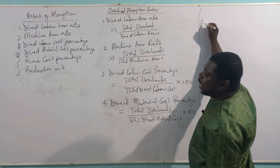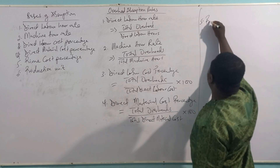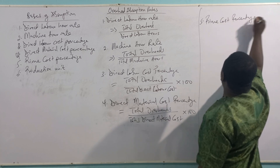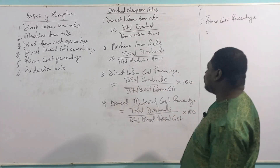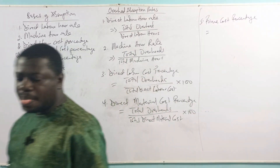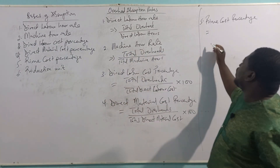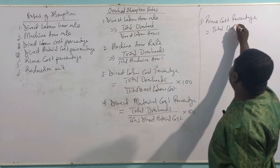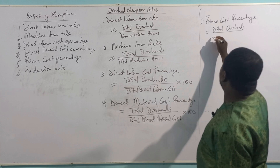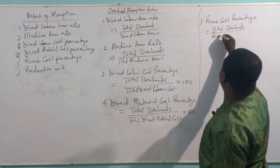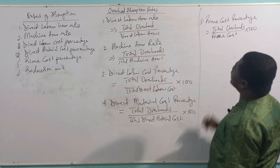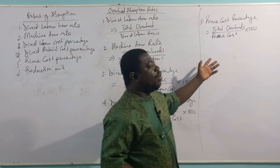The fifth basis is the prime cost percentage. We want to look at what percentage of your prime cost is the overhead incurred. The formula is: total overheads ÷ prime cost × 100 — also in currency over currency, so the answer will be in percentage.